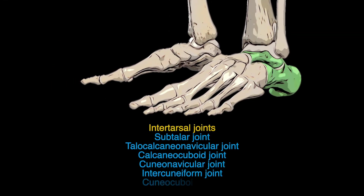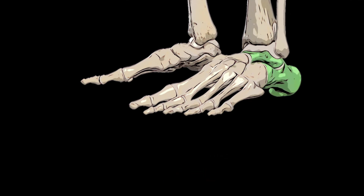Next we will review the articular structures. The intertarsal joints consist of the subtalar joint, the talocalcaneonavicular joint, the calcaneocuboid joint, the cuneonavicular joint, the intercuneiform joint, and the cuneocuboid joint. The calcaneus has a multi-faceted structure allowing bone articulations and soft tissue attachments. The lateral facet of the calcaneus articulates with the cuboid, forming a plain synovial joint surrounded by a fibrous capsule. Strong ligaments including the short plantar ligament, long plantar ligament, bifurcate ligament, and dorsal calcaneocuboid ligament stabilize this articulation.